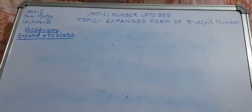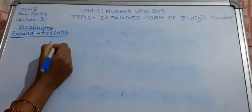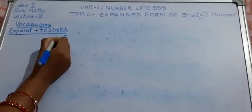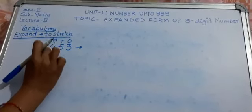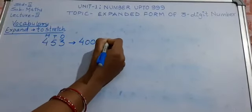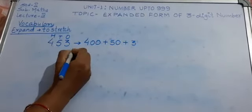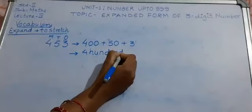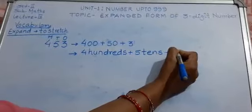Now we take another example of how to expand a 3-digit number. Here I have the number 453. The digit at the 1's place is 3, the digit at the 10's place is 5, and the digit at the 100's place is 4. In expanded form: 4 is at the 100's place so we write 400; 5 is at the 10's place so we write 50; and 3 is at the 1's place so we write 3. Another way: 4 hundreds plus 5 tens plus 3 ones.